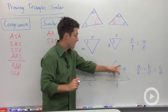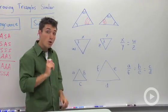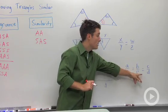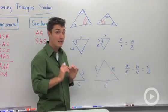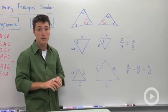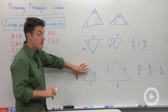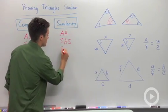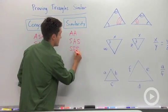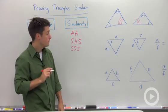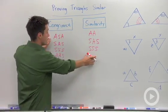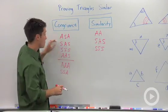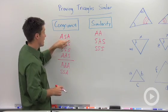Lastly, if all we knew were the three sides of two different triangles and their corresponding sides are proportional — meaning that ratio is constant between corresponding sides — these two triangles would also have to be similar. So side-side-side is also a similarity shortcut.